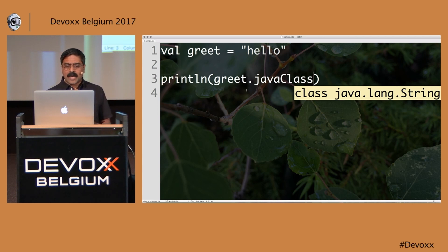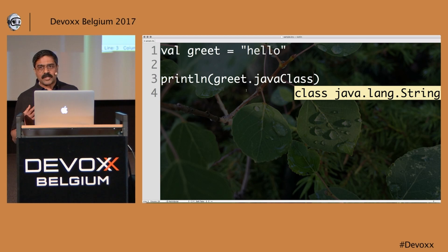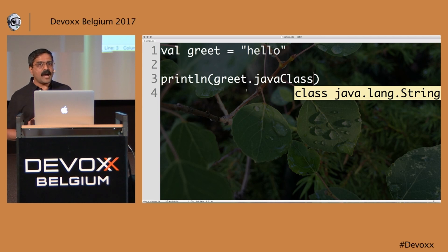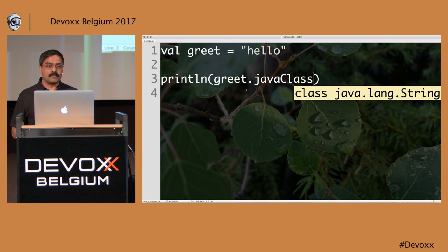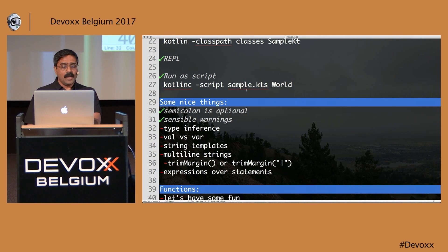So that's an example of type inference. My recommendation is to make use of type inference as much as you can. Of course, if you're writing a public-facing interface, it's a good idea to specify type information. But if you're writing a local variable, just don't bother specifying the type — let the inference kick in.